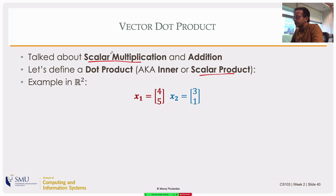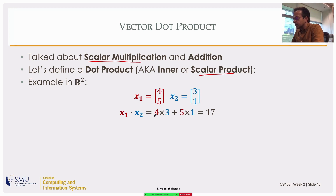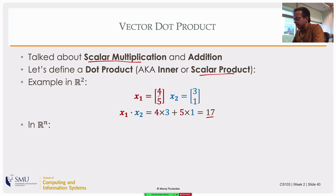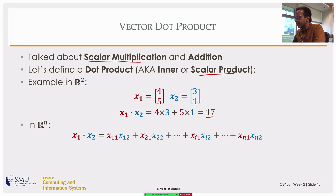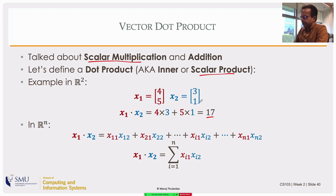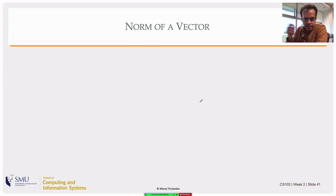So I have x1 and x2: [3,4] and [3,1]. I'm defining the dot product x1·x2 as the multiplication of corresponding elements of the two vectors and then summing them up — a sum-product. What you get is a number, not a vector, and that number is the dot product. This is in R2 with two elements, but in Rn you have n products, extending naturally. You can write this in summation notation as the sum from 1 to n of x_i1 · x_i2.